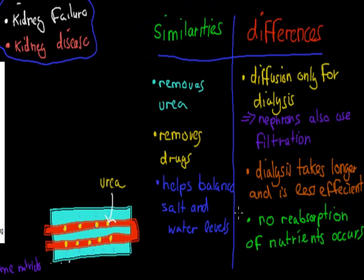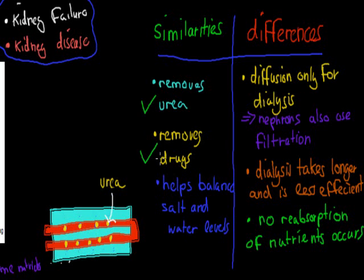Looking at this comparison table, the main similarities are that dialysis removes urea — which is a waste product we have to get rid of — it also removes bad drugs that we don't want in our body that might be poisonous to us, and it helps balance salts and water levels. These three functions are very similar to what our kidneys do, and the renal dialysis machine does them too.